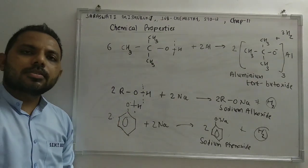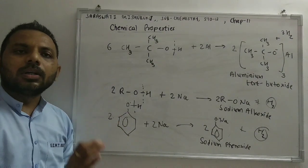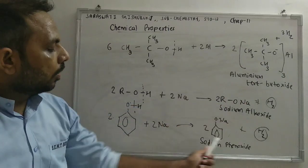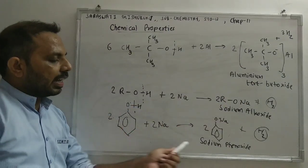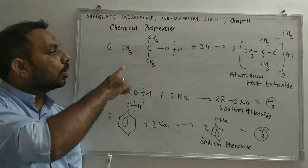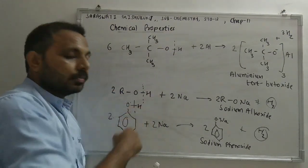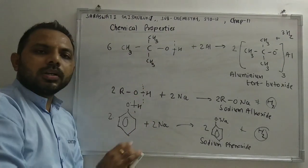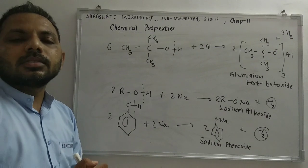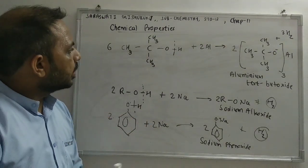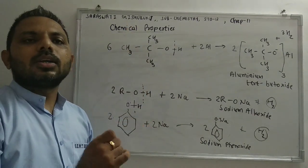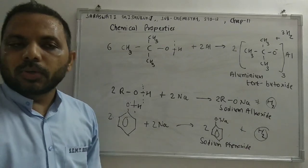All these reactions suggest that alcohol reacts with metals to form alkoxide, or alcohol/phenol reacts with metal to form phenoxide. These reactions suggest that alcohol is releasing H⁺ — the O–H bond is broken and H⁺ is released. Whenever any compound donates H⁺, it is acting as an acid. So these reactions confirm that alcohols are acidic in nature.